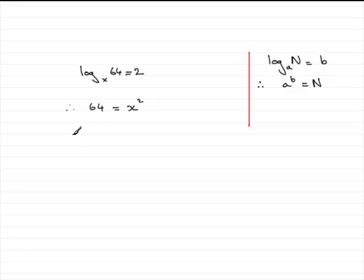x squared is 64. So to get x, we need to do the square root of 64. And they tell us that x is a positive value, so we don't have to write plus or minus here.